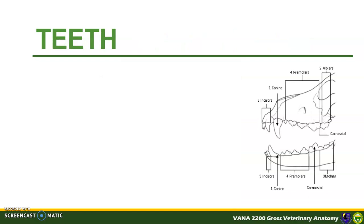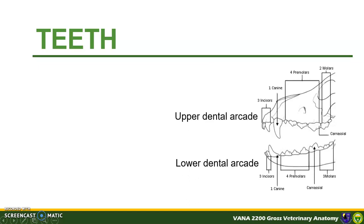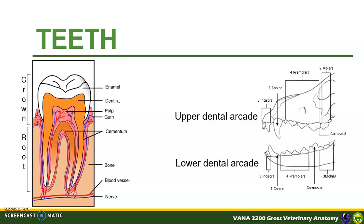The teeth are highly specialized structures that serve for the procuring, cutting, and crushing of food as well as for social interaction. They are arranged in two dental arcades. The lower dental arcade is associated with the mandible, while the upper dental arcade is associated with the incisive and the maxillary bone. A particular tooth is composed of a crown and a root. The crown is the part of the tooth visible above the mucous membrane of the gum, covered with enamel. The root is the portion covered with cement and is embedded in the gum through the socket of bone called alveolus by the periodontium, or the periodontal membrane, making up a specialized joint termed as gomphosis.